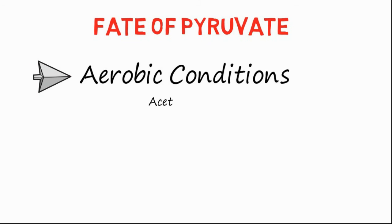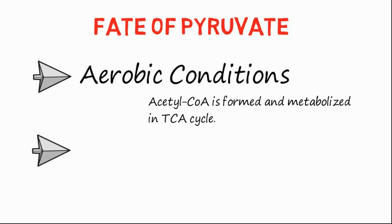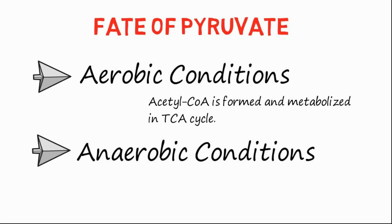Now, the next point is: what happens to pyruvate? There are two conditions. The first one is aerobic condition, in which acetyl-CoA is formed and is further metabolized in the TCA cycle for the sake of energy. The second condition is anaerobic condition, in which several possible products are formed, but the most important ones are the formation of lactate and ethanol.